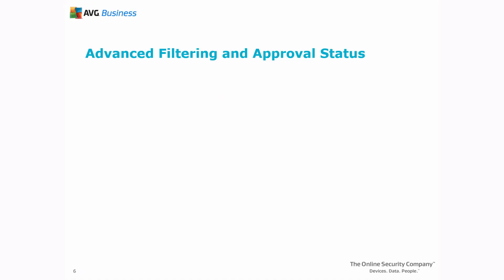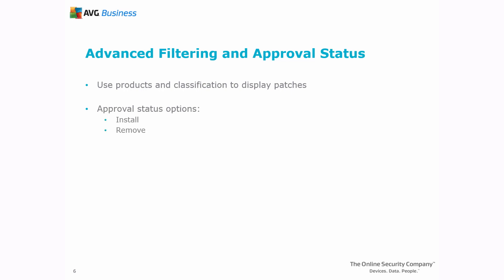You can use Advanced Filtering to display a subset of patches that are available for various products and classifications — for example, Update Rollouts, Security Patches, Feature Packs, to name a few. For each product and classification, you can set one of four approval statuses: Install, Remove, Declined, or Not Approved.